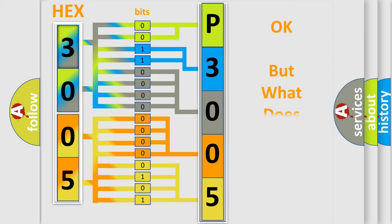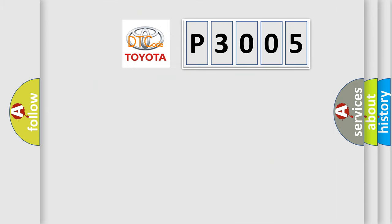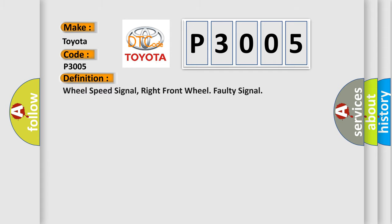We now know how the diagnostic tool translates received information into a more comprehensible format. The number itself does not make sense to us if we cannot assign information about what it actually expresses. So, what does the diagnostic trouble code P3005 interpret specifically for Toyota car manufacturers? The basic definition is: Wheel speed signal, right front wheel faulty signal.